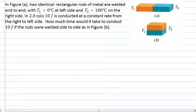T1 is 0 degrees Celsius on the left-hand side, and T2 is 100 degrees Celsius on the right-hand side. With this temperature difference, it takes two minutes for 10 joules to be conducted at a constant rate from the right-hand side to the left-hand side.